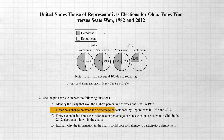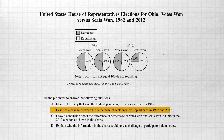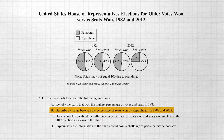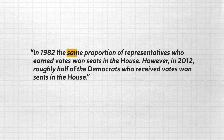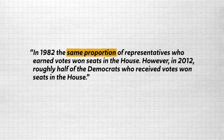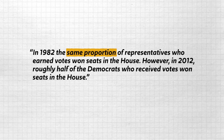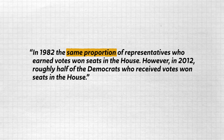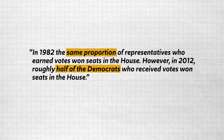Part B: 'Describe a change between the percentage of seats won by Republicans in 1982 and 2012.' It's clear that there is a change, so we just need to describe what we see in words. You could say something like: 'In 1982, the same proportion of representatives who earned votes won seats in the House. However, in 2012, roughly half of the Democrats who received votes won seats in the House.' That's it — I just earned the point. All I did was describe what I saw in the pie charts.